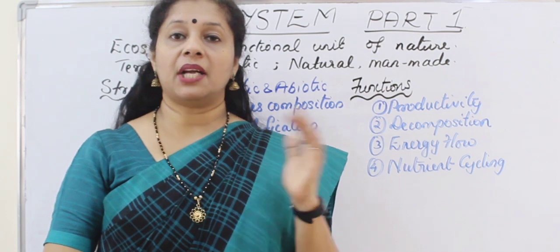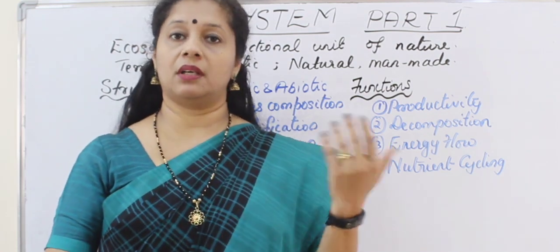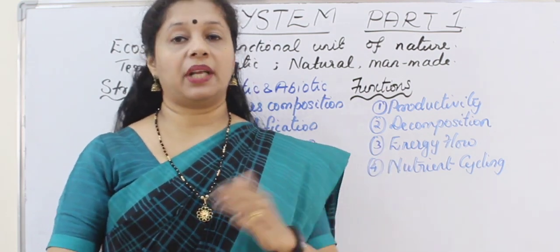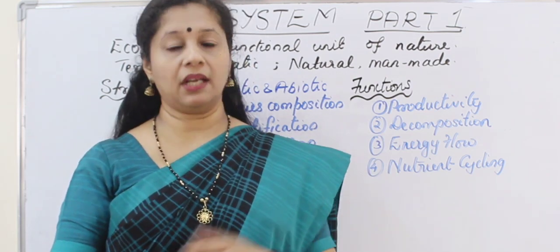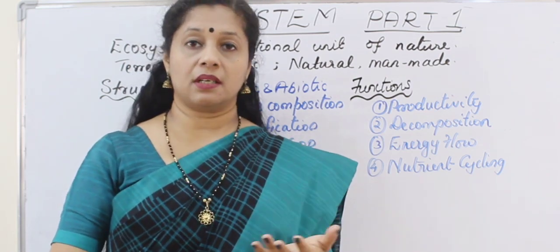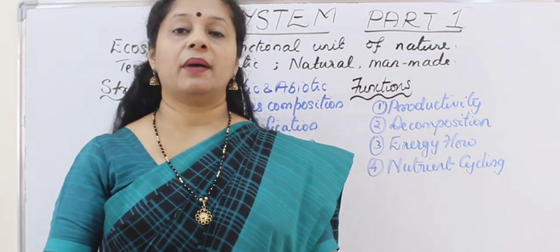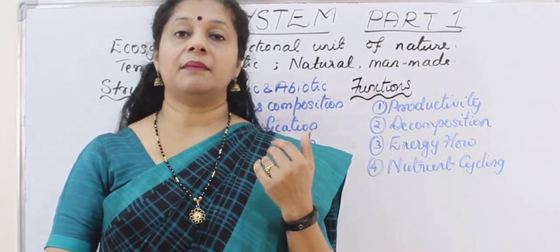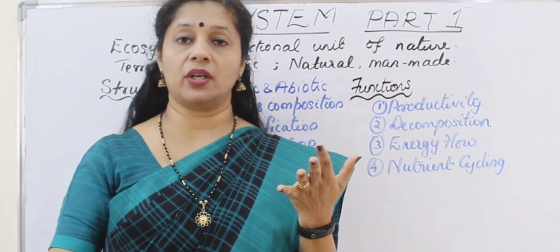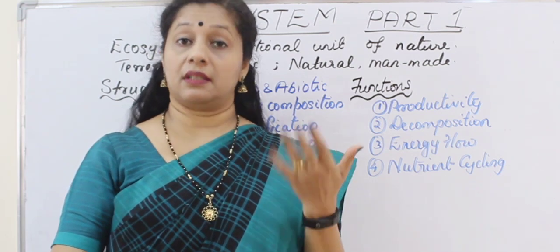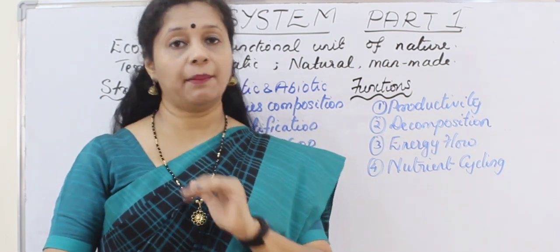Basically biotic and abiotic conditions should be there. Last chapter we learned what are biotic and abiotic. Living components are called biotic, which includes starting from microbes, then plants, animals, etc. Whereas the non-living components like temperature, humidity, rainfall, moisture, soil, solar input — all these are called abiotic.